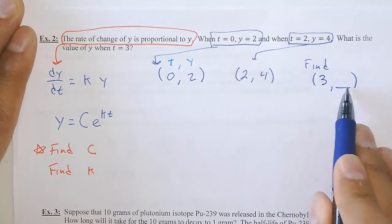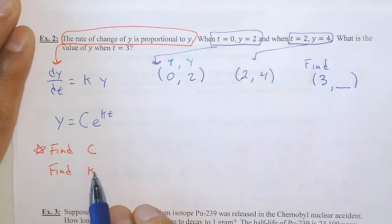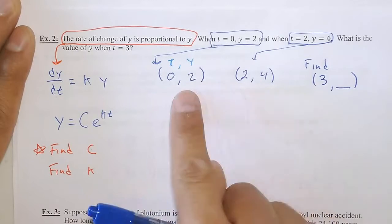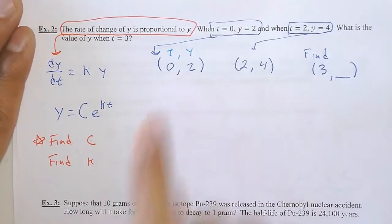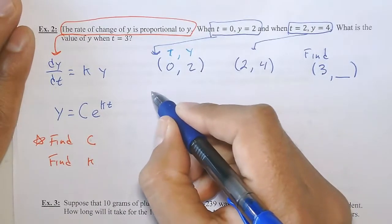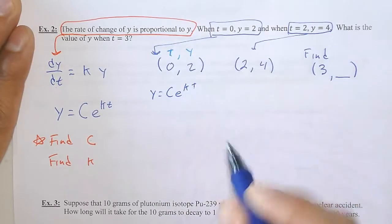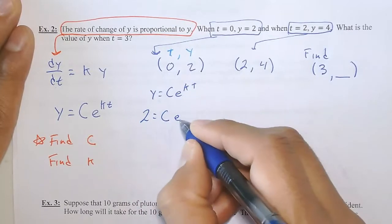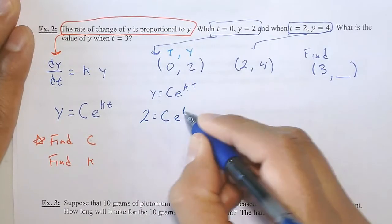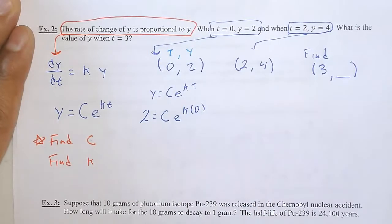Starting with the first ordered pair: y = Ce^(kt), so 2 = Ce^(k·0). Since k times 0 is 0 and e^0 is 1, I get C = 2. So the initial value C is 2.